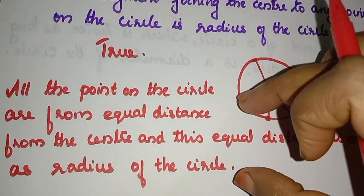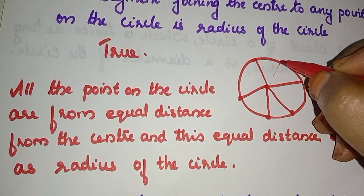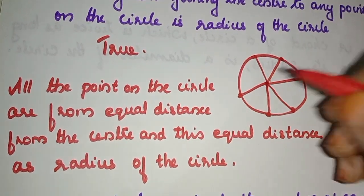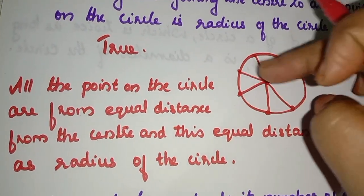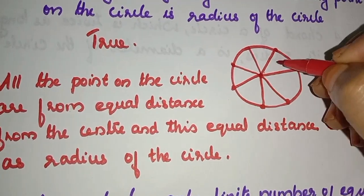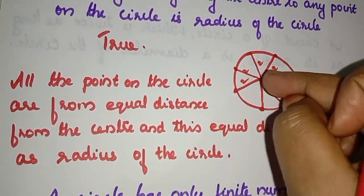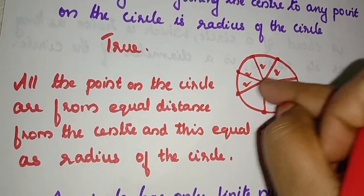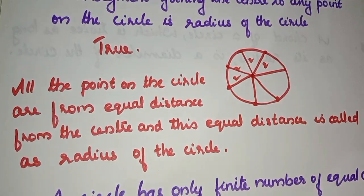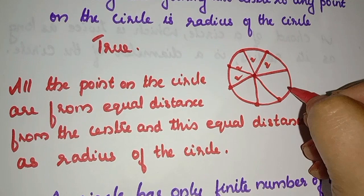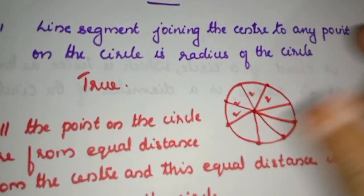So this is the reason we have to write. All the points on a circle are at equal distance from the center. If this distance is 2 cm, moving along the circle we can get any point. For that equal distance, we can join the line segment to the center and get the radius of the circle. True.